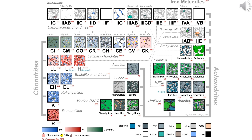Chemical composition analysis: use XRF spectroscopy or ICP-MS to determine the ratios of elements such as iron, nickel, magnesium and silicon. These ratios help in identifying the meteorite type. Chondrites generally have more iron and nickel than achondrites.